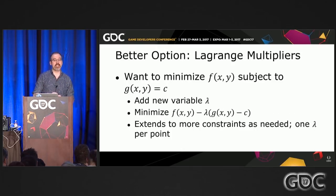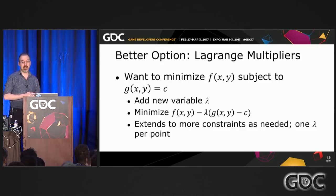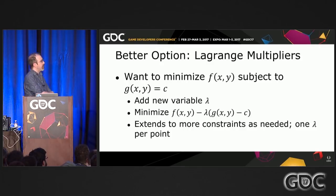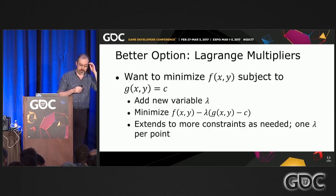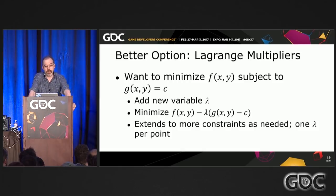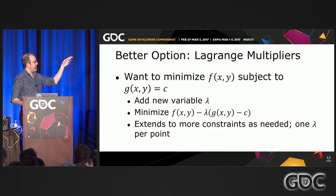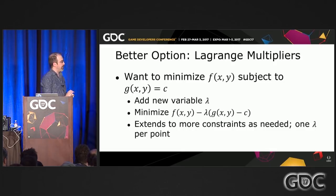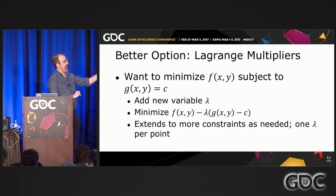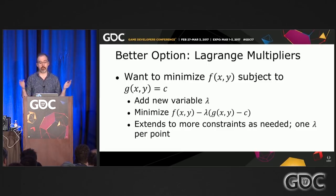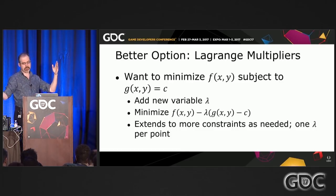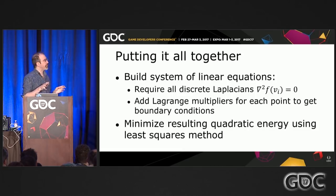What we recommend is going back to another idea from multivariable calculus: Lagrange multipliers. When you have a function you want to minimize subject to some equality constraint, you add a new variable lambda and minimize a combined expression — f(x, y) minus how far off you are from the constraint. If you need more constraints — more boundary points you want to set — you just add more lambdas, one per point. Yes, your matrix gets larger, but it's still sparse.